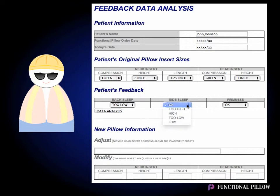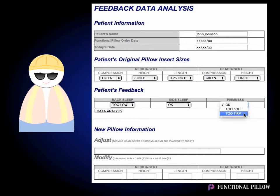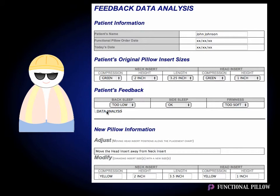Lastly, ask John how he felt about the firmness of the pillow. It could either be okay, too soft, or too firm. In this case, we'll say that his pillow felt too soft. When we're done, we'll click on the Data Analysis button to get the result.